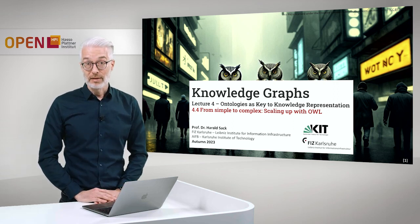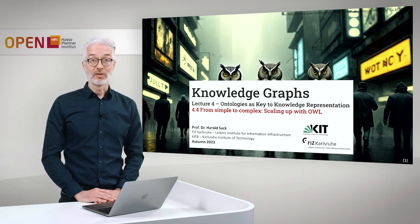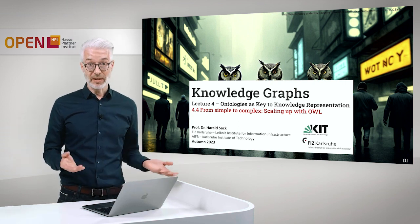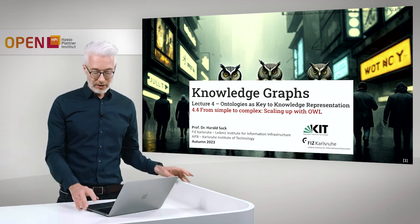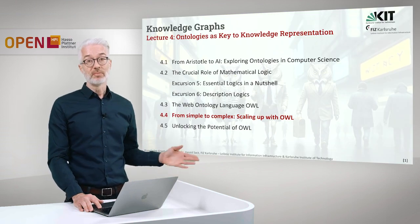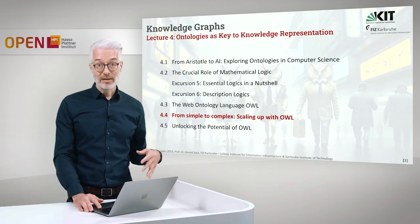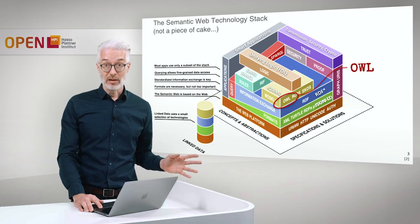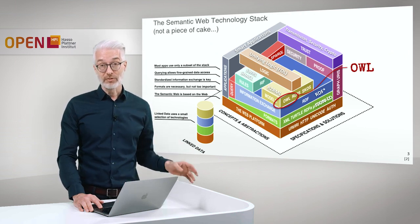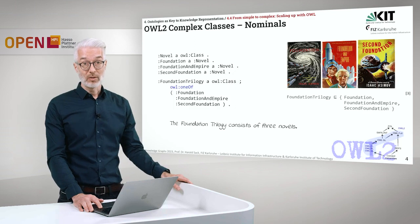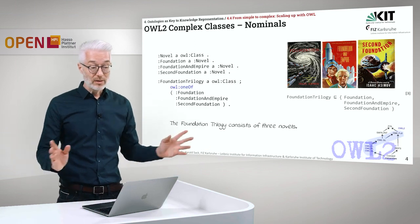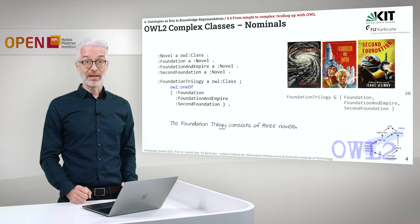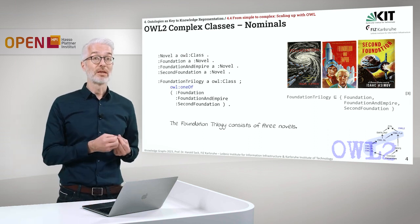Welcome. I'm Harald Sack and this is Knowledge Graphs, lecture number 4: Ontologies as Key to Knowledge Representation. In this section of the lecture we are going from simple to complex by scaling up with OWL. We are still on the modeling layer of the Semantic Web Technology stack with OWL, and we go right into the middle of it and start with complex classes — first, nominals.